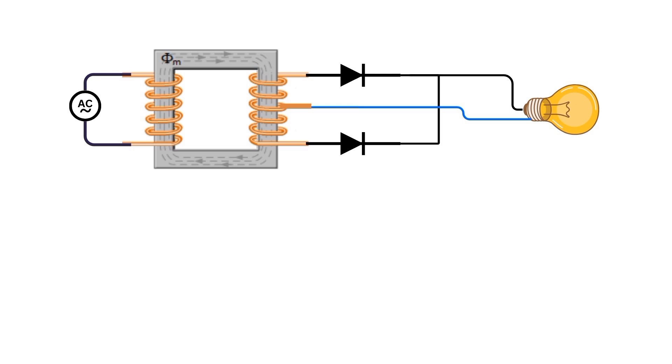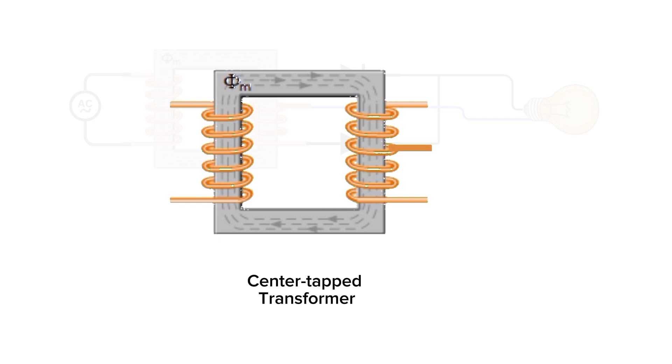In a full-wave rectifier, two diodes are used and a center-tap transformer. A center-tap transformer simply has another wire on the secondary side, which is connected to the center of the transformer coil. This allows us to use the full length of the transformer coil or just half of it.